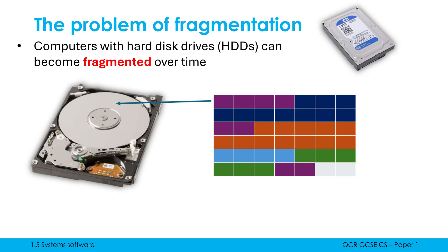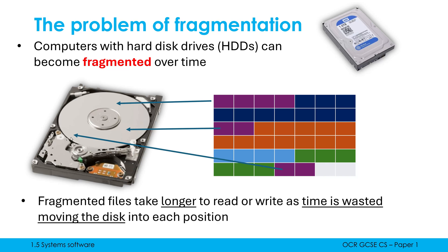In reality, one fragment could be right at the top of the disk, the next on the side, and another right across the other side. That's a massive issue because the disk has to spin to reach each of those locations. When a file was stored in one block, the drive didn't have to move far to read all the data. When it's split across multiple locations, the disk has to rotate round to get to each one, and that takes time. So when files are fragmented, they take longer to read or write because time is wasted moving the disk into each different position, making the computer feel a lot slower.